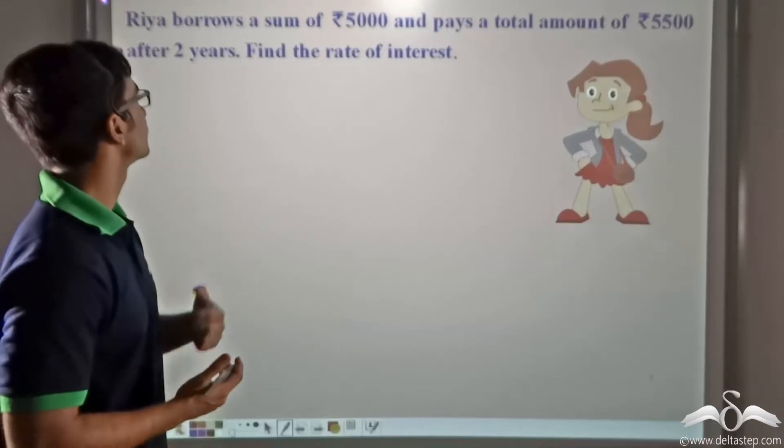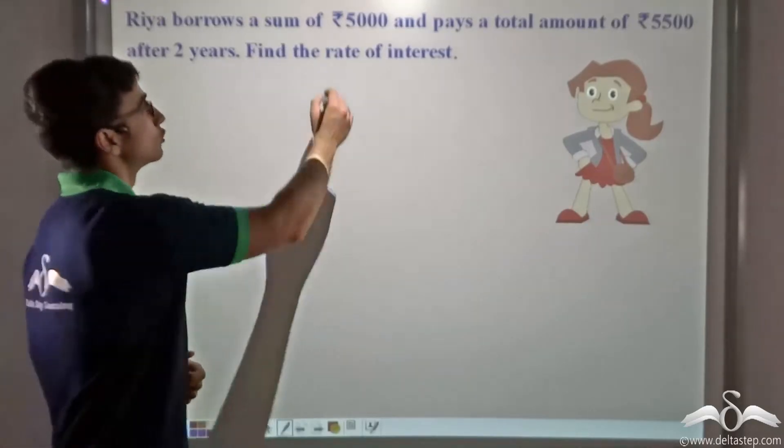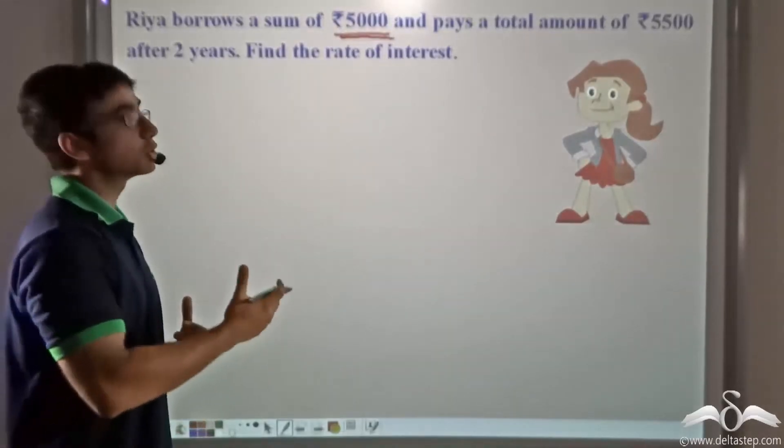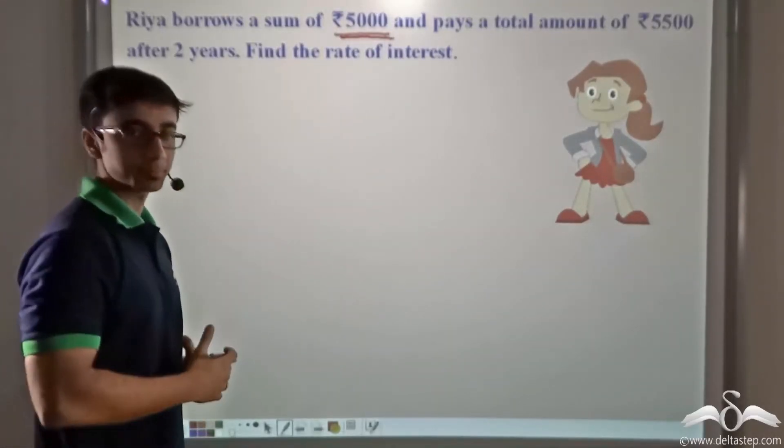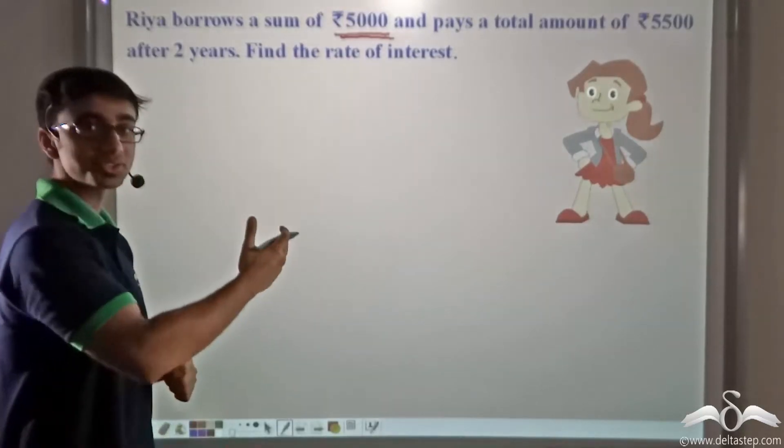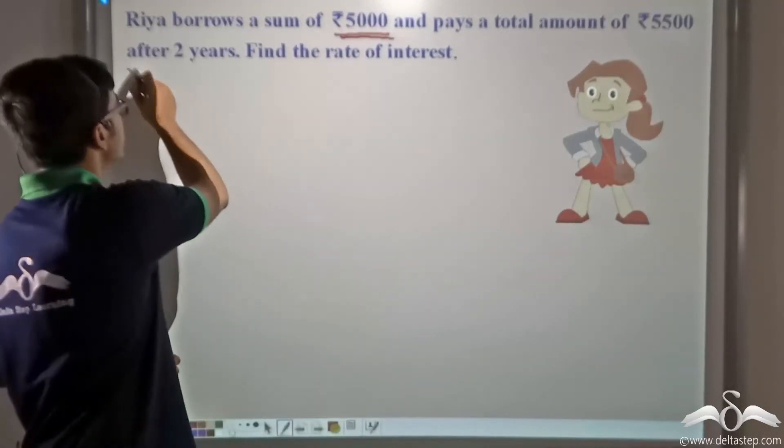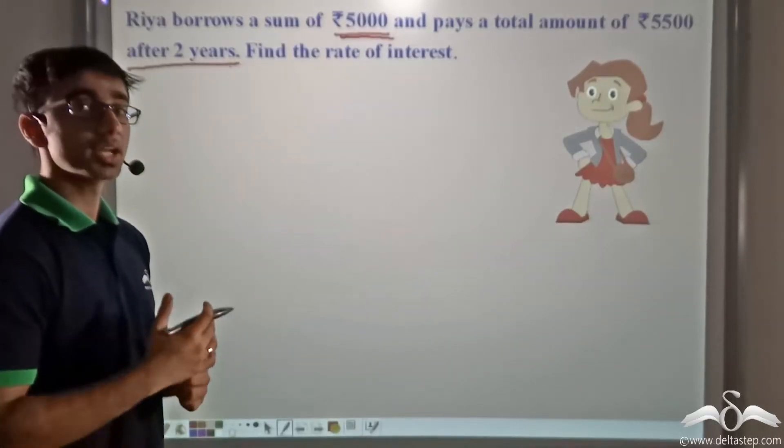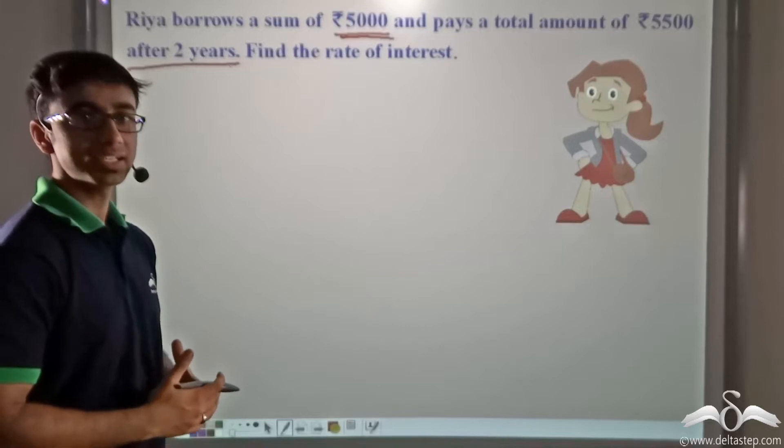The sum says that Rhea borrows a sum of Rs. 5000. So this is the amount of money that she is borrowing, and she pays a total amount of Rs. 5500 after two years. So we have to find the rate of interest, or in other words, we have to calculate R.